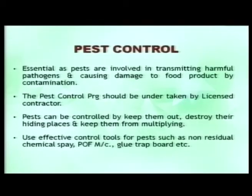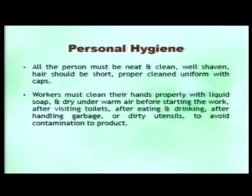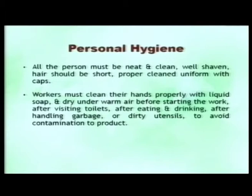Pest control: pests are another source of contamination which needs to be appropriately controlled, with a program in place. Pest control should only be done through a licensed contractor. The system should destroy pest hiding places, avoid multiplication, and ensure chemical spray usage is appropriate. Personal hygiene: hygiene must be maintained at a personal level — workers should be clean, well-shaven, hair should be short, hands must be cleaned properly after toilet use and sanitized where required. Eating and drinking should not be done in working areas. Workers handling garbage should clean themselves again afterward.